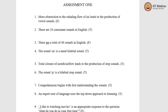The third question is: there are a total of 48 sounds in English. The right answer is false, because there are a total of 44 sounds in English. We have 20 vowel sounds and 24 consonant sounds, making it a total of 44 sounds in the English language.